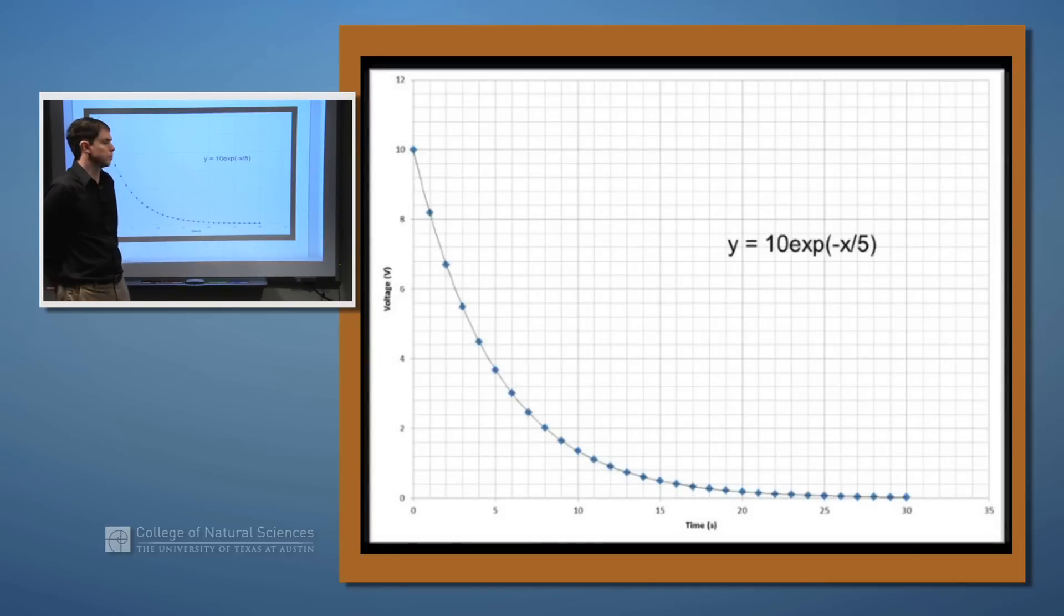This is a function that you'll see when you deal with RC circuits for instance. This is for example a graph of voltage which starts at 10 volts and approaches zero. It has an RC time constant of five seconds and it follows this very nice exponential decay.